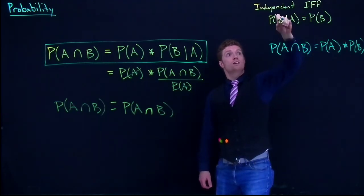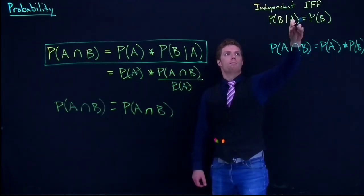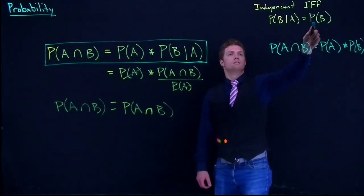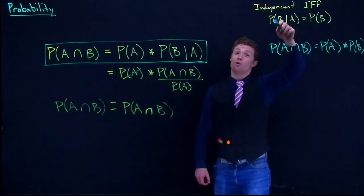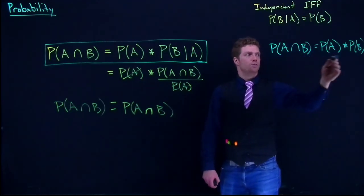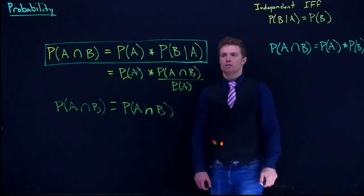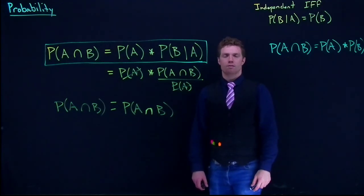B. But that only works if this conditional probability equals—so if B given A equals the probability of B—that's the only way that this multiplication rule simplifies down. We'll do more examples and applications of that in later videos.